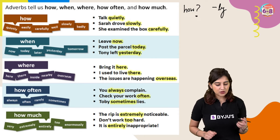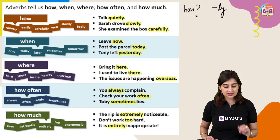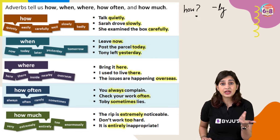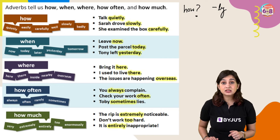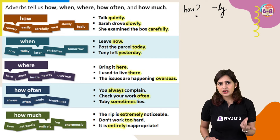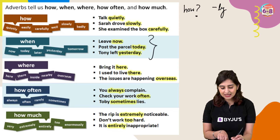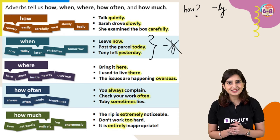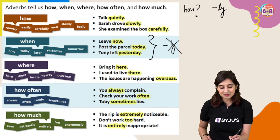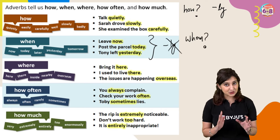The same logic applies to when, where, how often, and how much. Time adverbs don't end in -ly, but you can still identify them by asking the question. 'Leave now' — when? Now. 'Post the parcel today' — when should I post it? Today. 'Tony left yesterday' — when did Tony leave? Yesterday. These time adverbs won't end in -ly, but asking the question will make it clear.